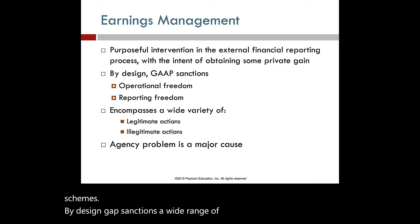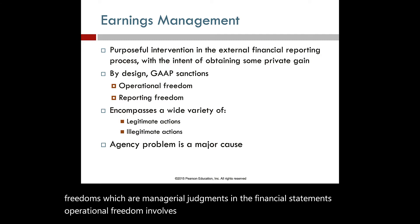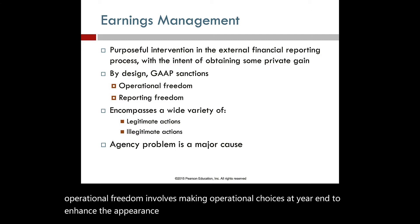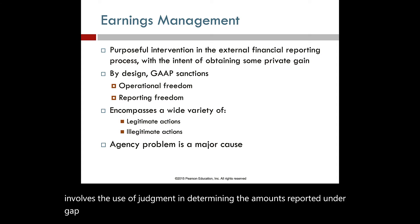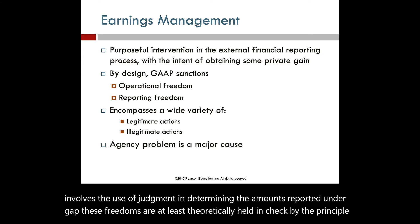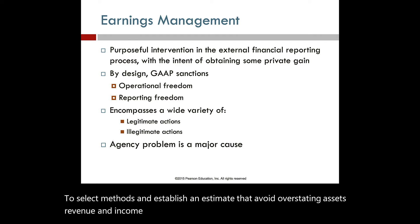By design, GAAP sanctions a wide range of both operational and reporting freedoms, which are managerial judgments in the financial statements. Operational freedom involves making operational choices at year-end to enhance the appearance of certain accounts, whereas reporting freedom involves the use of judgment in determining the amounts reported under GAAP. These freedoms are at least theoretically held in check by the principle of conservatism, which directs management to select methods and establish estimates that avoid overstating assets, revenue, and income.